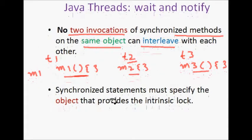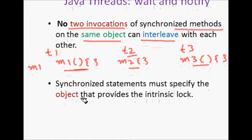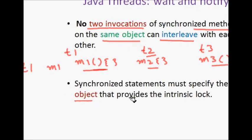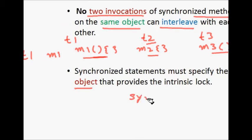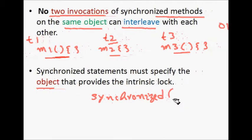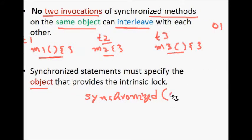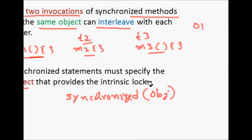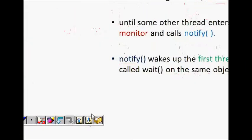Even if the method is long, synchronized statements must specify the object that provides the lock. You can use synchronized with a method declaration, which means the class object itself will be the monitor. But if you are using it in a block statement with synchronized, you have to specify which object you are trying to synchronize on.